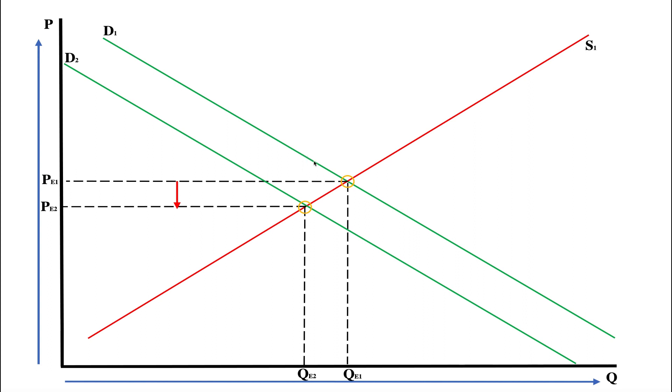So what this is showing us is demand can actually decrease and supply can remain constant, but we can still get a decrease in price. So you can see here PE1 is our original equilibrium price. As the demand curve shifts to the left, you can see PE2 is the new equilibrium price. So we are lower on the supply curve, but the demand curve has shifted and that's how we get this lower price.